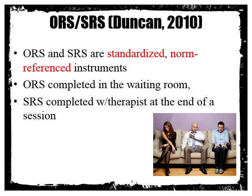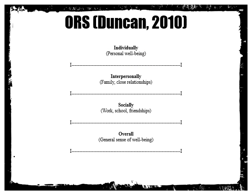The Outcomes and Session Rating Scales are standardized, norm-referenced assessments — standardized in that the same question items are asked in the same administration every time to every client, and norm-referenced in that the client's responses are compared with a norm group. The Outcomes Rating Scale is completed in the waiting room, whereas the Session Rating Scale is completed with the therapist at the end of the session, so you can have a kind of pre-post structure.